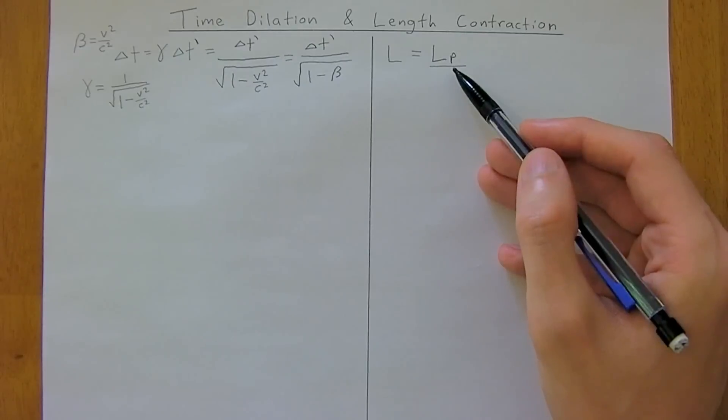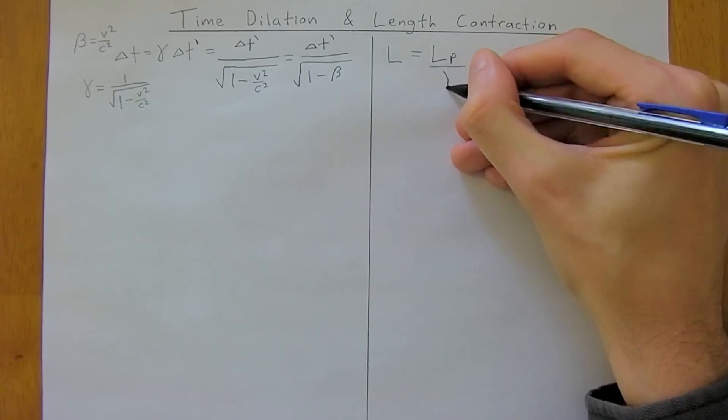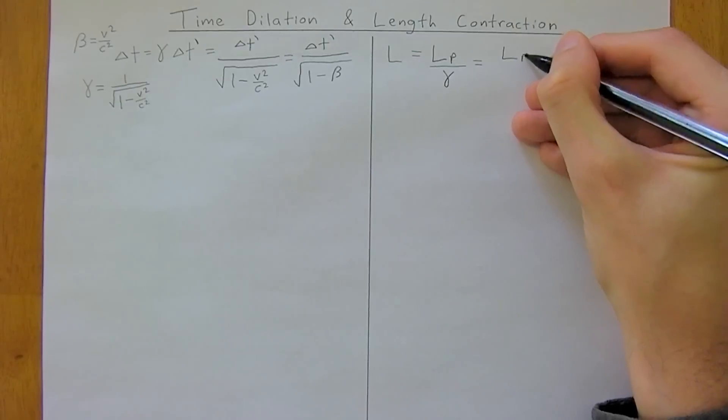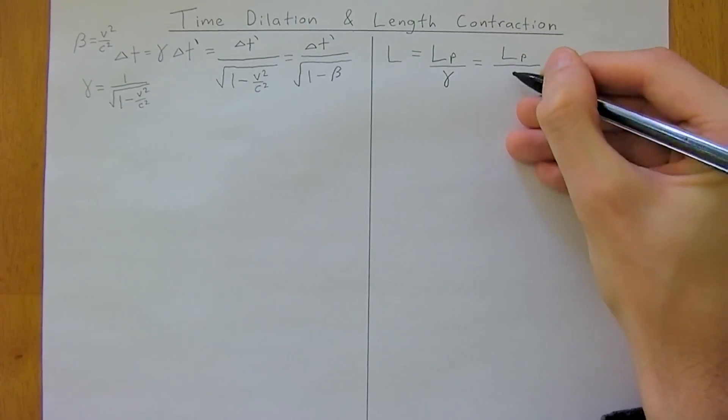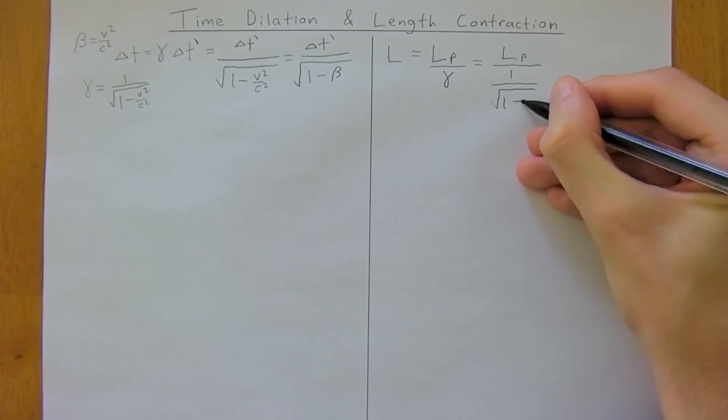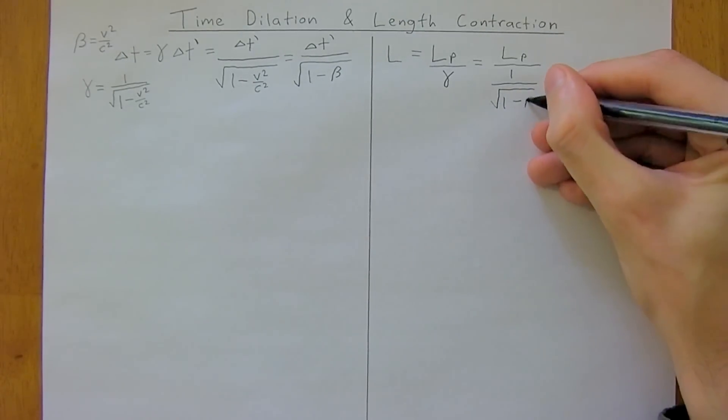But with length contraction, it's length proper divided by gamma, which is length proper divided by 1 over square root of 1. Let's use this notation now. So 1 minus beta.